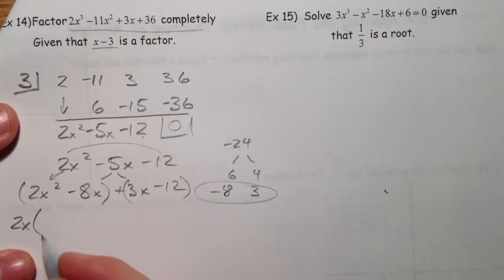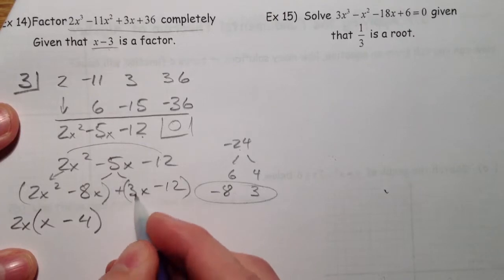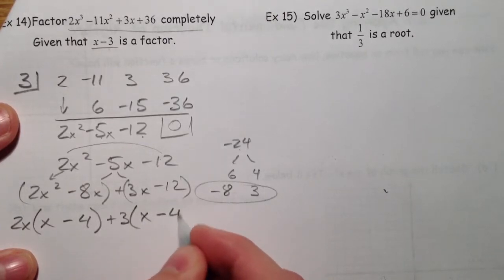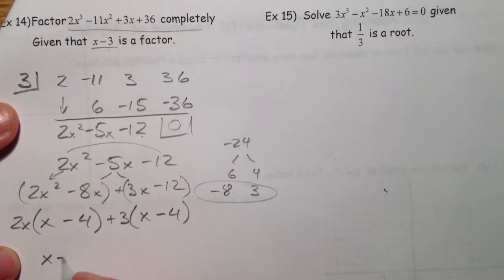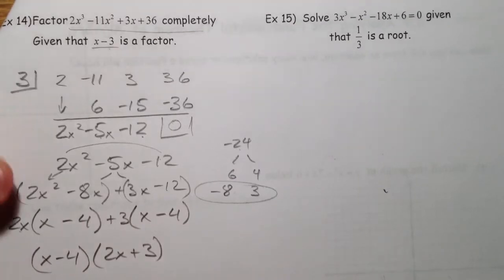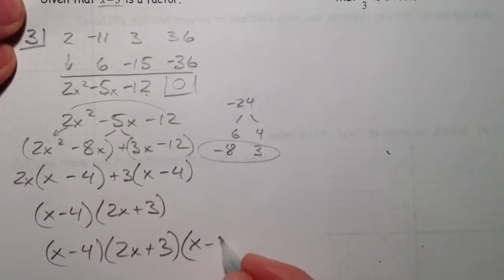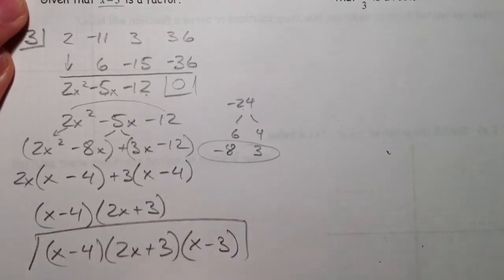Pull out the 2x. That leaves an x minus 4. Pull out the 3. That leaves an x minus 4. x minus 4, 2x plus 3. And so the final factored form would look something like this. If I multiply those two together and then tack on our x minus 3 that we divided by at the beginning.